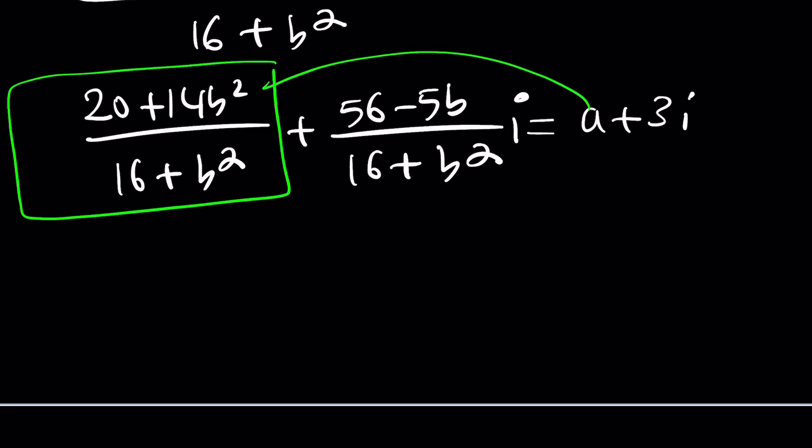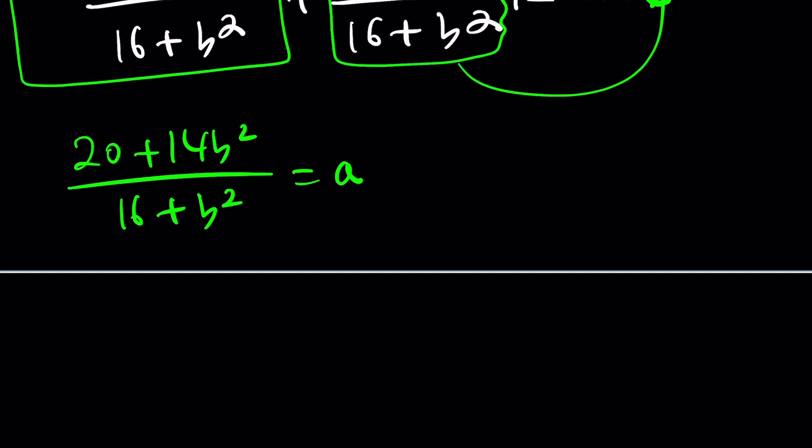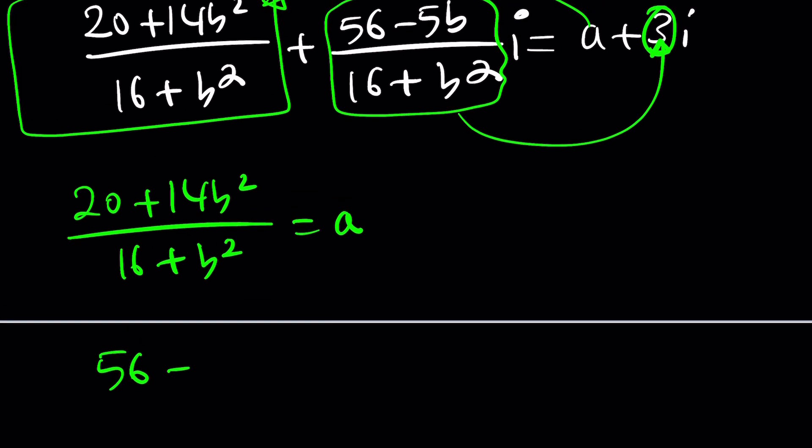So this whole thing is equal to a. Don't worry about this too much because we have another equation. Now, this thing needs to equal 3, which is a good thing. So let's set that equal as well: 56 minus 5b divided by 16 plus b squared is equal to 3.